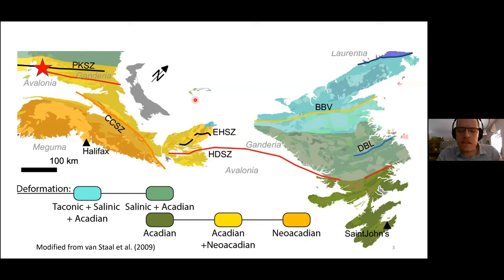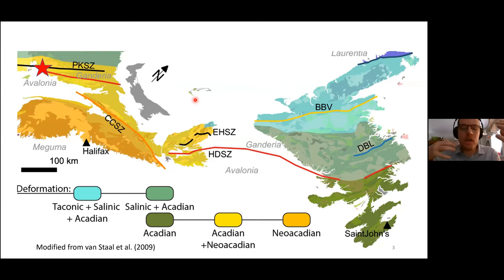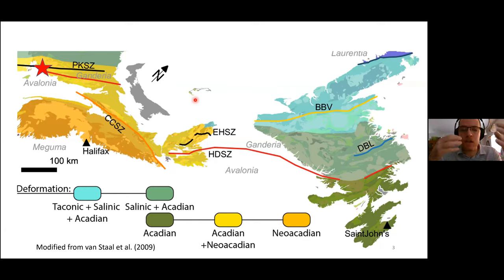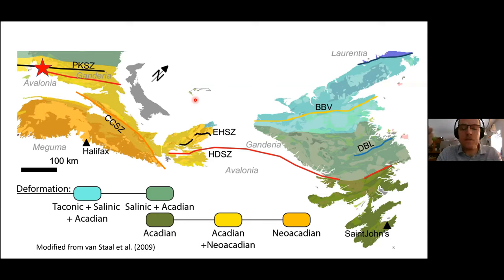The Canadian Appalachians are interesting on their own. It's an accretionary orogen, meaning that during the convergence of Laurentia and Gondwana, we recorded at least four major deformation or tectonic events until the final continent-continent collision. The Canadian portion of the Appalachians escaped that final collision, so it keeps a lot of characteristics typical of accretionary orogens — multiple shear zones and many long-lived shear zones that were reactivated multiple times.